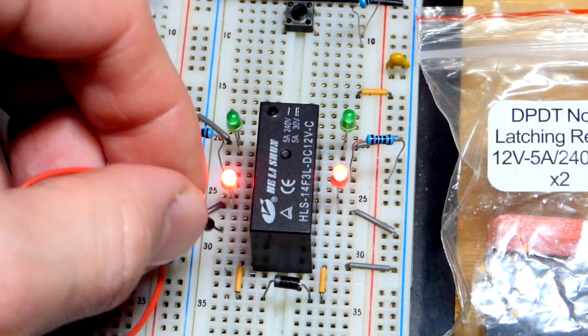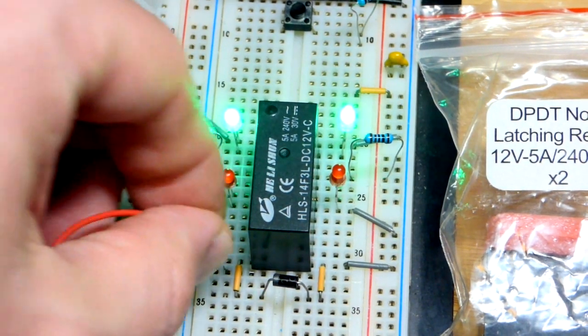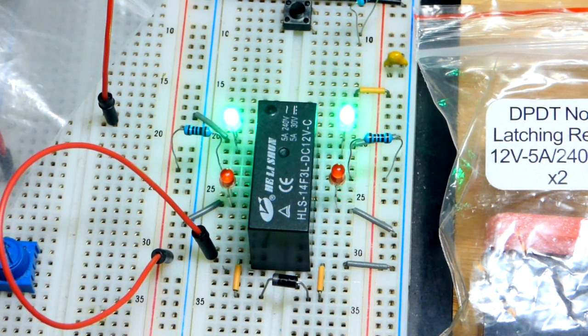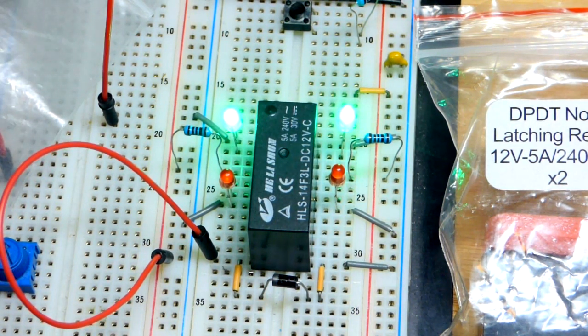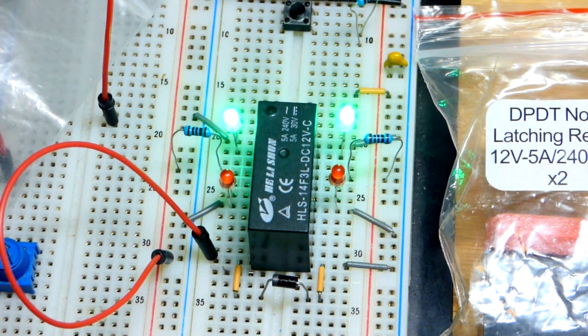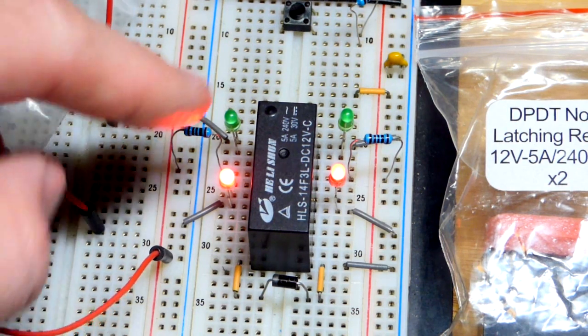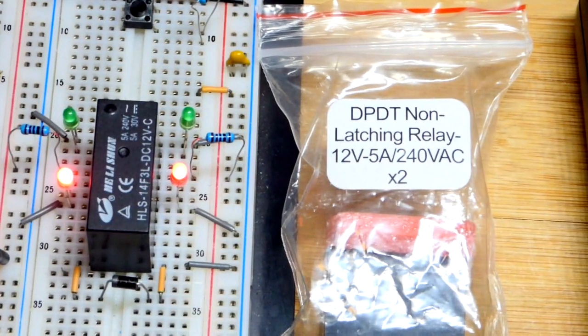I have this jumper to the positive supply, and when I give a voltage to the coil in there, now it switched. I have to keep the voltage across that coil, keep current flowing through it to keep it in that state. If I remove this, then it flips back. That is why it is non-latching.